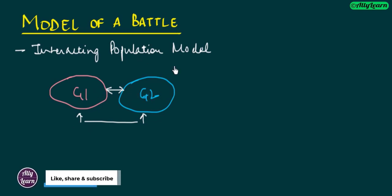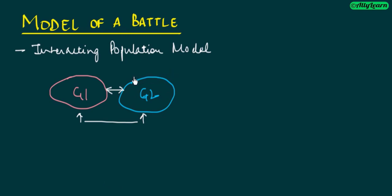When we talk about battles, we have humans — basically human armies. There can also be battles between hostile insect groups and a model can be made for that too, but here we will be restricting our study to human armies only.